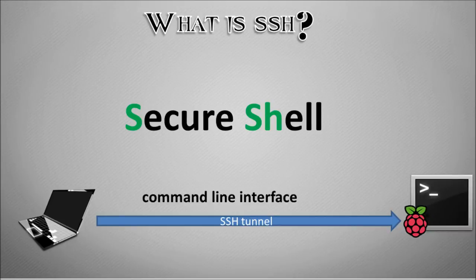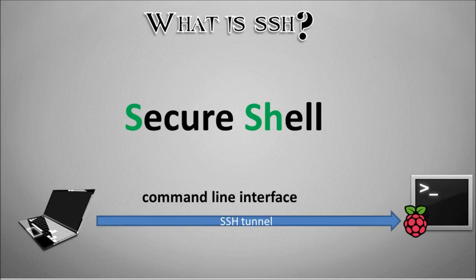What that gives us is on the laptop we will be able to view the command line interface from the Raspberry Pi, but actually be able to view it on another device — our laptop in this example. What differentiates SSH from other connection types is the fact that it's an encrypted and secure connection.